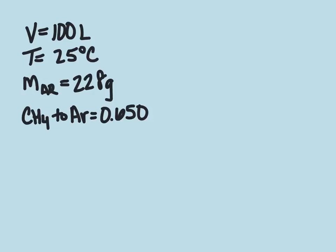For this problem, we're told that we have a 100 liter flask that contains a mixture of methane and argon gas at 25 degrees Celsius. We know that the mass of the argon is 228 grams and that the mole fraction of methane in the mixture is 0.650. And we're trying to calculate the total kinetic energy of the gas mixture.